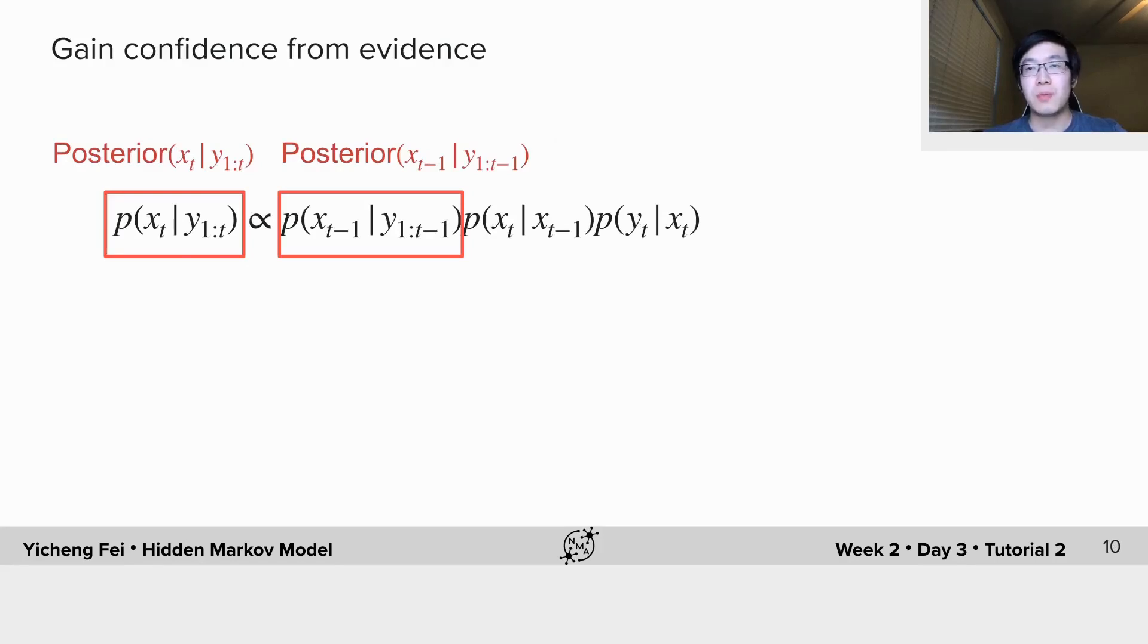Okay, in the previous example, we illustrated how the probability of staying at the initial state decays without evidence. Let's now incorporate evidence to improve our inference of latent states.